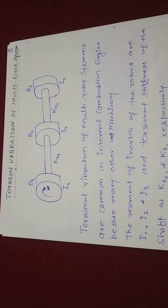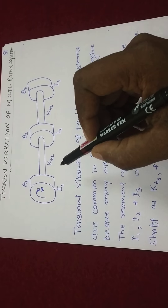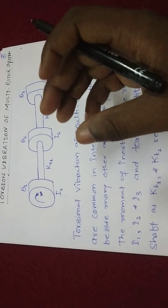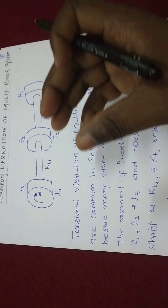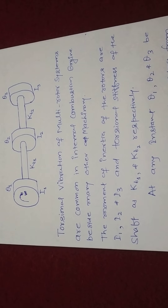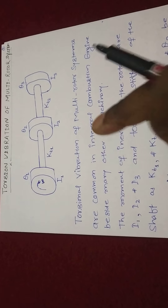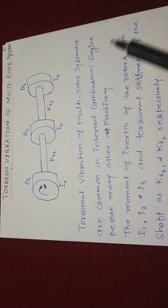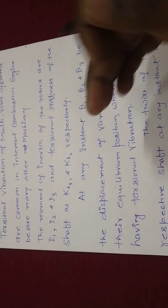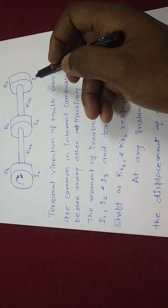Torsional vibration of a multirotor system is mainly used in mechanical applications such as internal combustion engines, rock crushers, and different types of mills. We consider the moment of inertia I1, I2, I3 of the corresponding rotor masses and torsional stiffness KT1 and KT2 for the respective shafts. At any instant, the displacements are theta 1, theta 2, and theta 3.